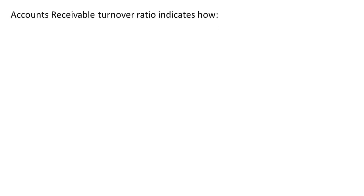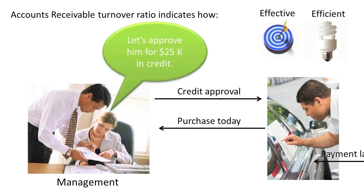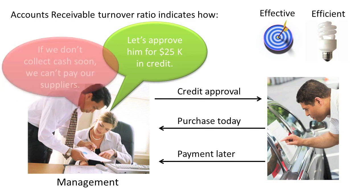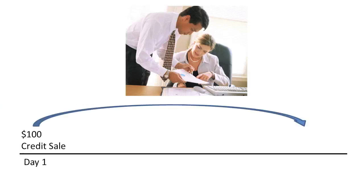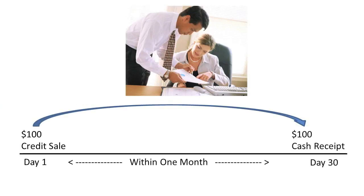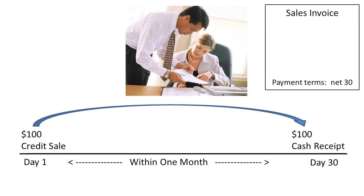The Accounts Receivable Turnover Ratio, or AR Turnover Ratio, indicates how effective and efficient management is at granting credit to and collecting cash from credit customers. When management takes too long to collect cash from customers, it will often have difficulty paying its own suppliers. In general, well-run credit and collection departments are usually able to collect their receivables within 30 days of the date of sale. Many businesses specify net 30 days on their invoices to ensure that customers know they expect full payment within 30 days of the date of sale.